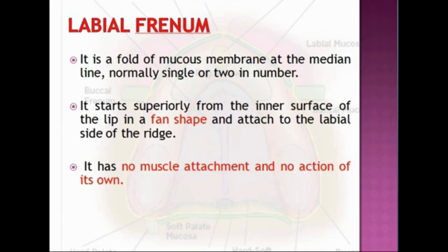The first limiting structure is the labial frenum. It is a fold of mucous membrane at the median line, normally single and sometimes double. It is a thick band of mucosa connecting the mucosa of the alveolar ridge to the upper lip. It starts superiorly from the inner surface of the lip in a fan shape and attaches to the labial side of the ridge.